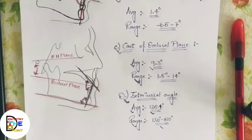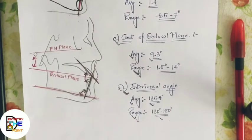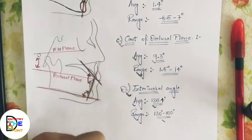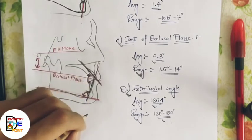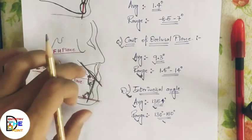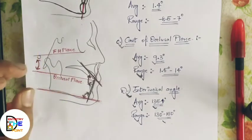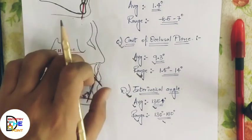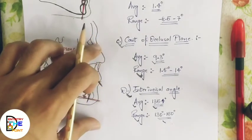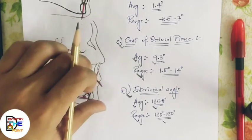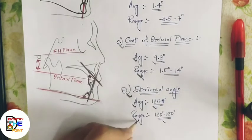The fourth dental parameter is the inter-incisal angle — formed between the long axis of the upper incisor and the long axis of the lower incisor. This angle decreases in cases of proclined anteriors, such as bimaxillary protrusion or Class 2 Division 1. If the angle increases, as in Class 2 Division 2, the central incisors are retroclined. The average is 135.4 degrees, ranging from 132 to 150 degrees.